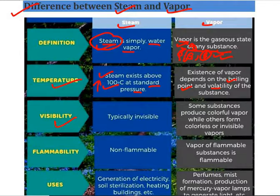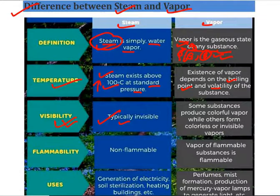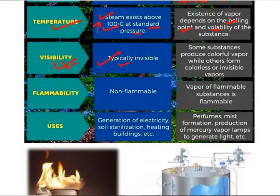From the visibility point of view, steam is typically invisible or generally invisible. Although in cold conditions steam may appear slightly whitish, normally superheated or dry steam has no visible color. Some substances produce colorful vapor, while other vapors may be colorless or invisible. Vapor can be colorless or colored, but steam generally has no color.